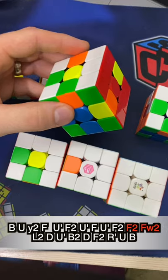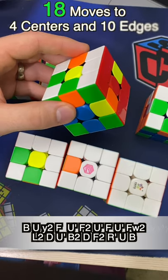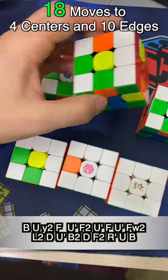And then I added two moves which cancelled two moves leaving me still 18 moves but now with 10 edges out of place and four centers.